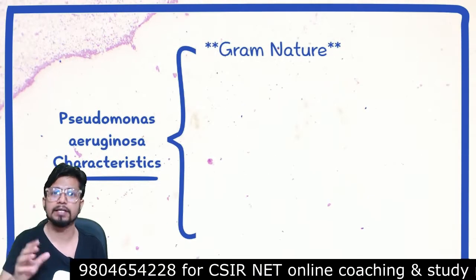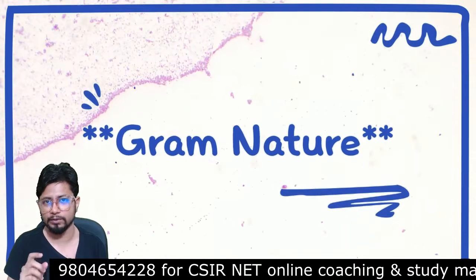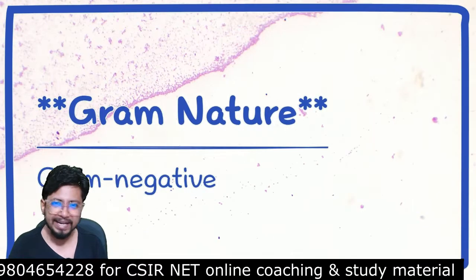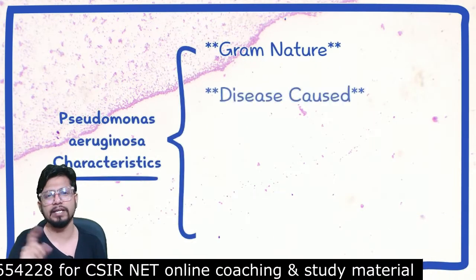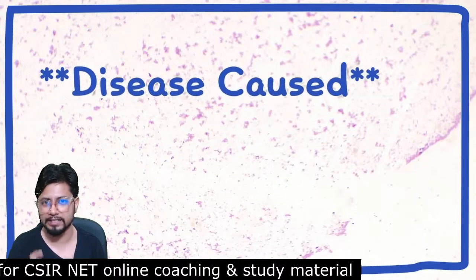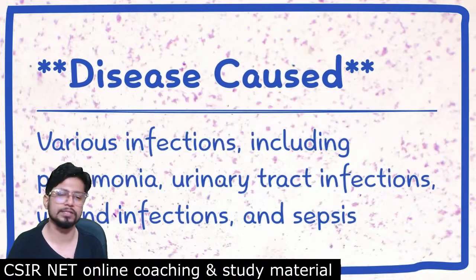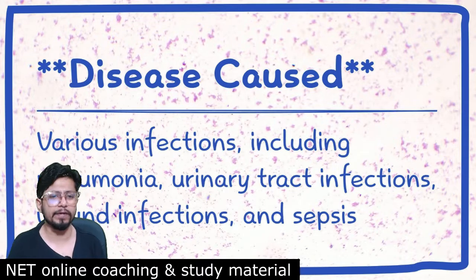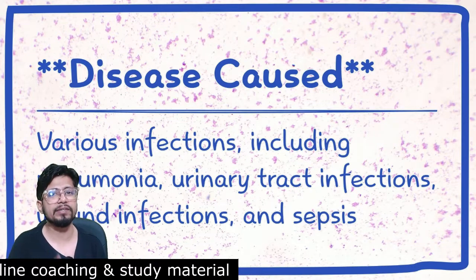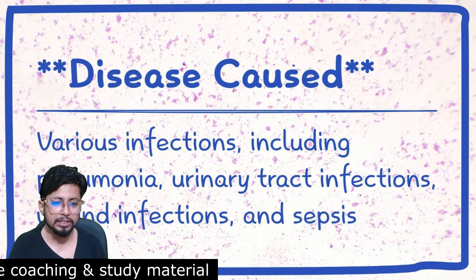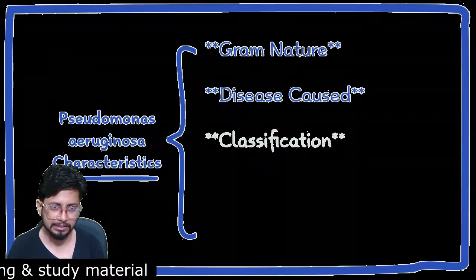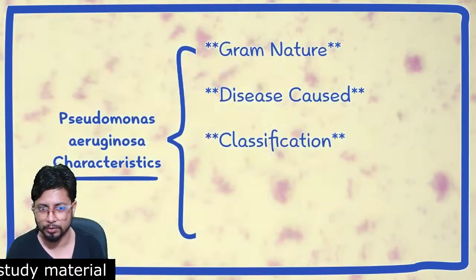The very first parameter we are going to discuss is the gram nature of Pseudomonas aeruginosa. It is gram-negative in nature — if you do gram staining, it will be gram-negative. The diseases caused by Pseudomonas aeruginosa include various kinds of infections, including pneumonia, urinary tract infection, wound infection, and even sepsis.